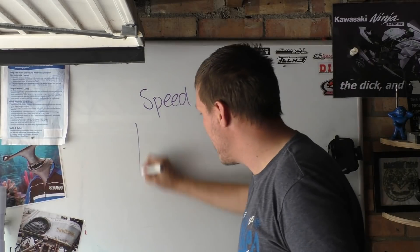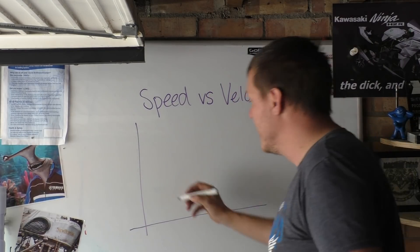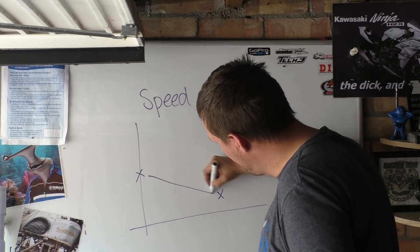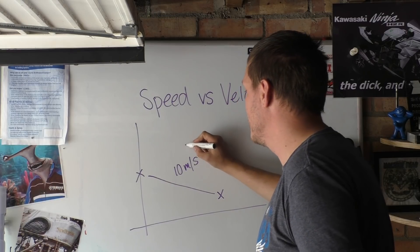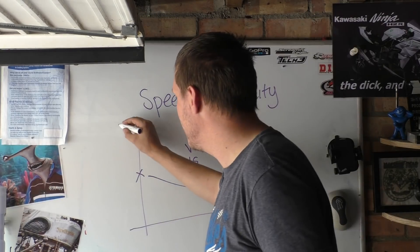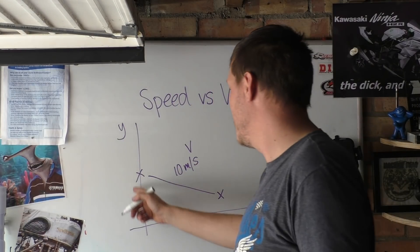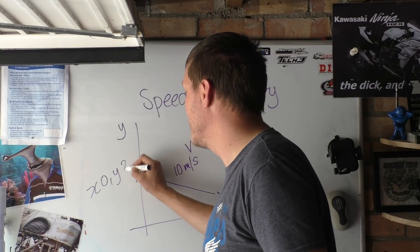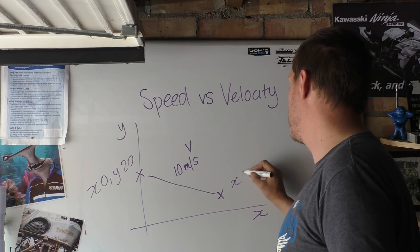You can have a graph and before you panic graphs are simple, they're really easy. If you go from here to here like that at just say 10 meters per second, this is a velocity. Why? Because we have an x-y here, we have an x-y coordinate system. We can say that this is x zero and this is y 20 and we can say this is x 30.